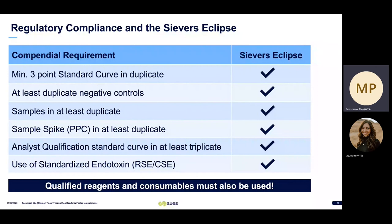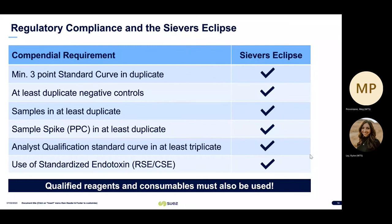How does the Eclipse meet all of these requirements? As mentioned, you can run a minimum three-point standard curve. The standards offered are 50, 5, 0.5, 0.05, and 0.005 EU/mL — not all have to be utilized for each assay, so you could easily run a three-point standard curve if desired. There is a negative control segment so a negative control can be run with each assay. Each sample is run in duplicate along with the sample spike segments, and you can perform analyst qualification easily through the software using a triplicate standard curve.